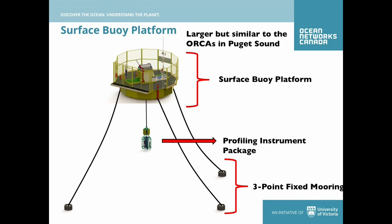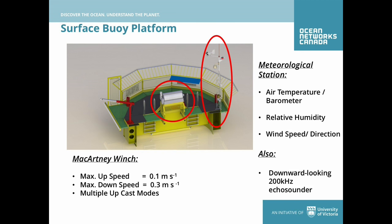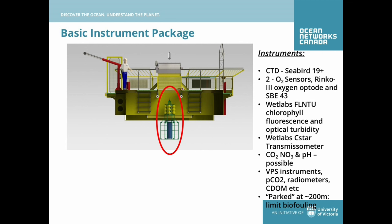It's made of two components basically: the float and the profiling package, moored in a three-point moored system. The float currently carries a MET station — temperature, pressure, relative humidity, wind speed and direction — as well as a downward-looking 200 kHz echo sounder. The profiling package profiles the entire water column, is stowed at depth to minimize fouling, and rises to the surface measuring CTD, oxygen sensors — both a fast-response RINCO and SB43 — fluorescence with a WET Labs ECO, backscattered turbidity, and a transmissometer.